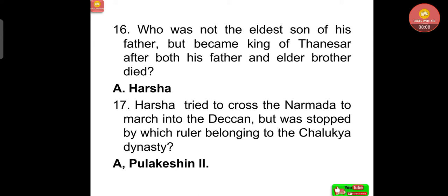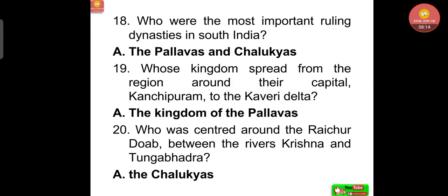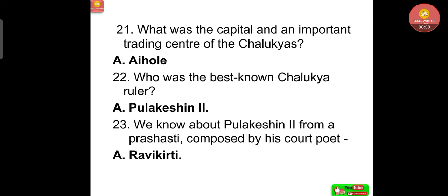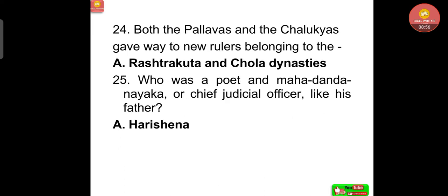Harsha tried to cross the Narmada to march into the Deccan but was stopped by Pulakeshin II of the Chalukya dynasty — a very important person. The most important ruling dynasties in south India were the Pallavas and the Chalukyas. The Pallava kingdom spread from the region around their capital Kanchipuram to the Kaveri delta. The Chalukyas were centered around the Raichur Doab between the rivers Krishna and Tungabhadra. The capital and important trading center of the Chalukyas was Aihole. The best-known Chalukya ruler was Pulakeshin II.